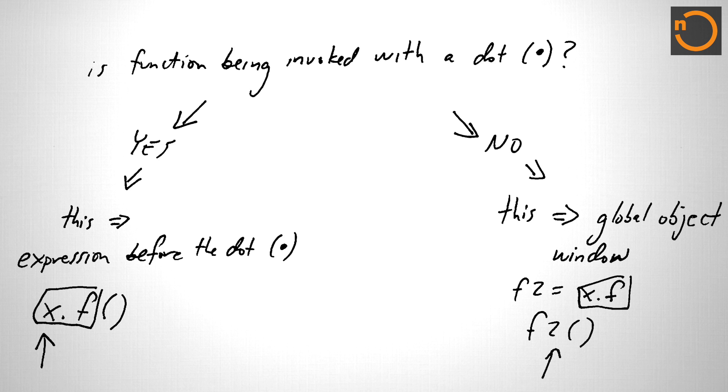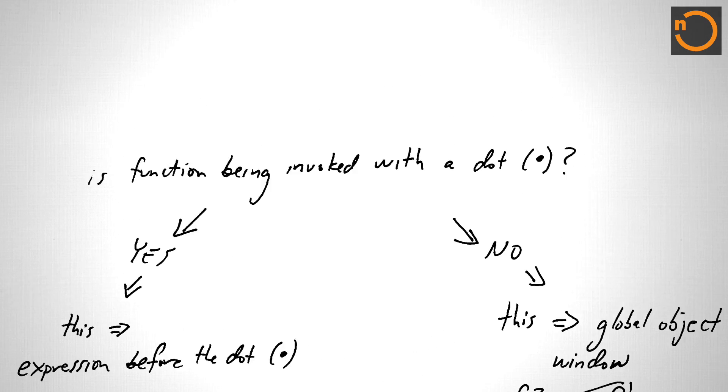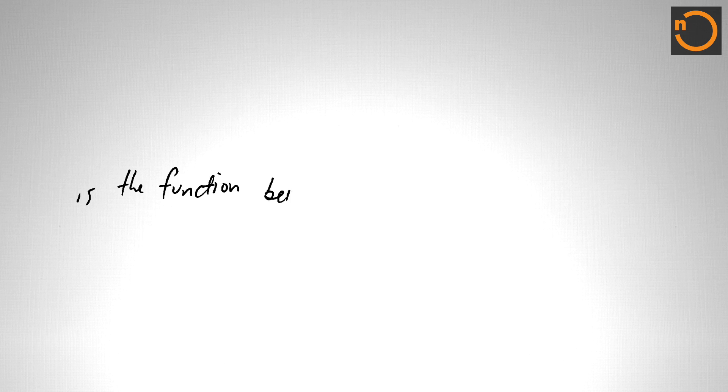And it turns out that there are a couple of other edge cases. We won't talk about all of those here. They're in the spec. But one other one to be aware of actually happens above this decision point in the tree. And that's is the function being invoked with the new operator.